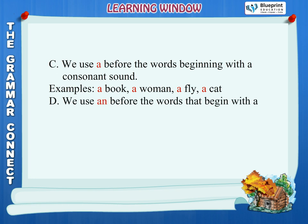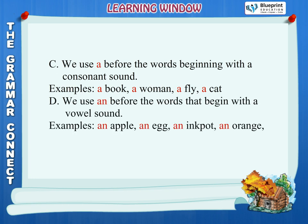Rule D: We use an before words that begin with a vowel sound. Examples: an apple, an egg, an inkpot, an orange, an umbrella.